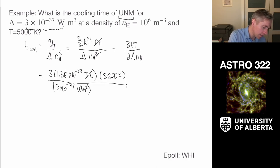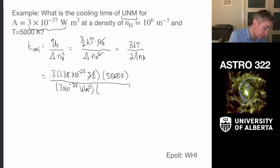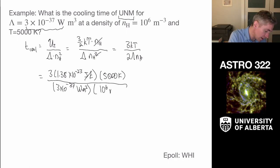Now I'll plug in lambda, which I've read off the graph as 3 times 10 to the minus 37 watt meter cubed. And then I'm going to multiply that by the density of the material, which is 10 to the 6 per meter cubed. Units cancel there and there, and kelvins cancel. So it's a joule over a watt. We end up with units of time. So all of the units work out really nicely.